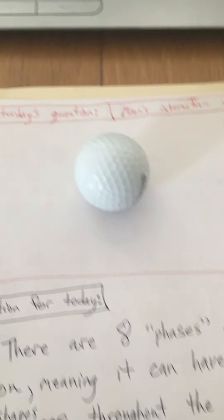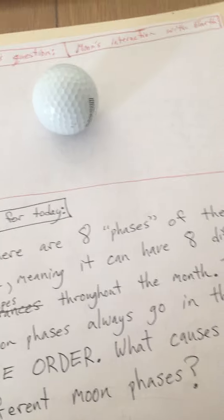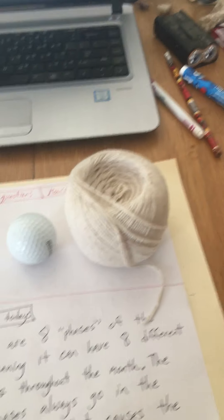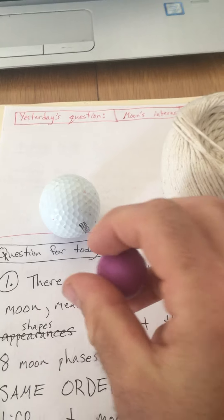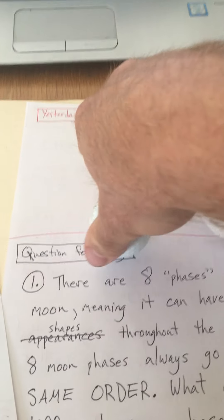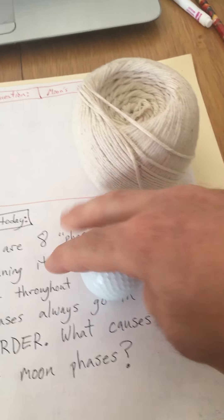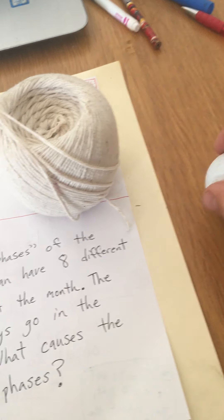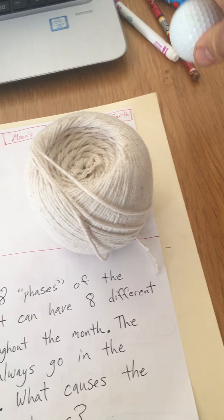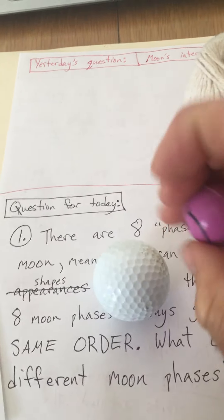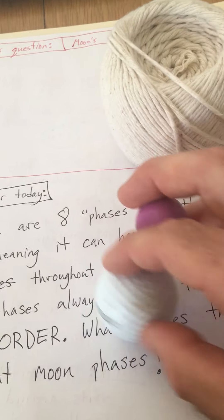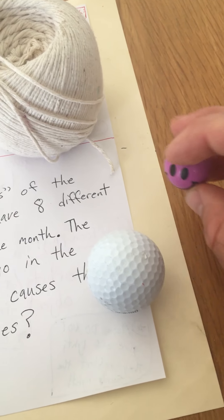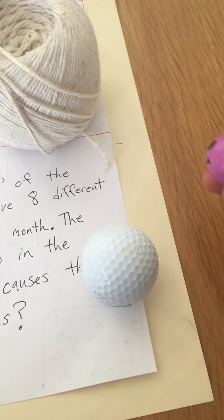The moon revolves or orbits around the Earth. The moon is stuck in our gravity field and stays the same distance around us, going around facing us the same way all the time. While Earth is rotating and spinning, it's also revolving around the sun — it spins once a day, and that's why we have day and night. It takes a whole year to go all the way around the sun. At the same time, it takes about 28 or 29 days for the moon to revolve all the way around the Earth.